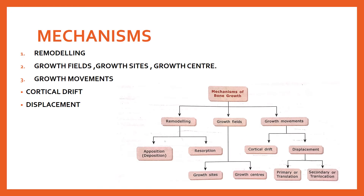There are three mechanisms involved in bone growth: remodeling, growth fields, and growth movements — that is cortical drift and displacement. In remodeling there are two terms: deposition and resorption. In growth fields there are growth sites and growth centers. Growth movements are divided into cortical drift and displacement, and displacement is of two types: primary and secondary.